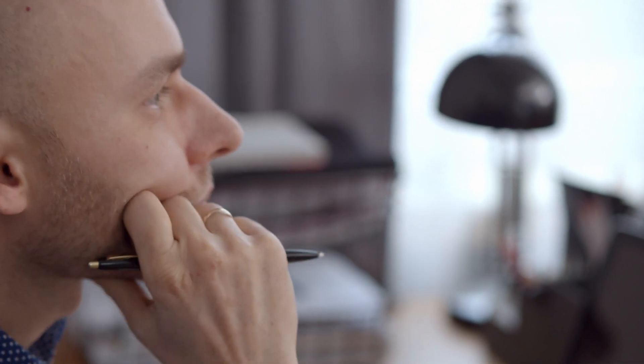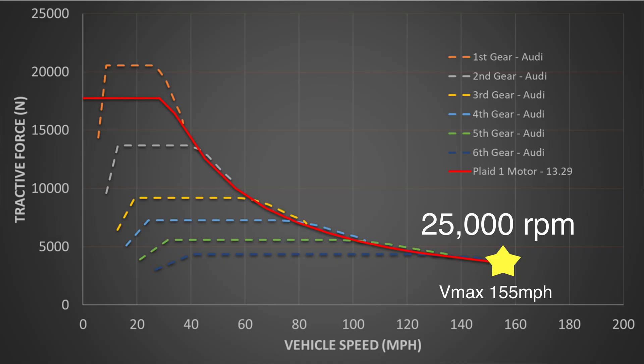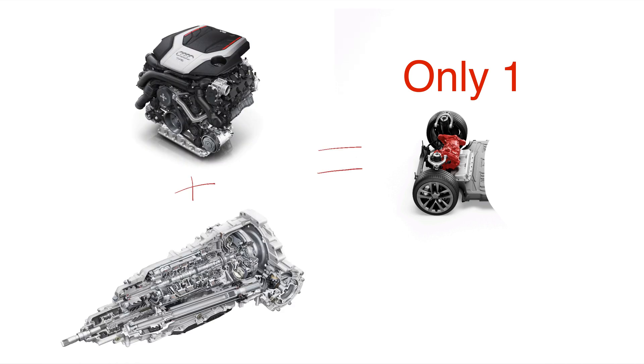If we take this one step further, what if the Plaid motor can spin to 25,000 RPM? Purely hypothetical at this moment, but not out of the realm of possibility. This would allow us to increase the gear ratio to 13.29 and increase peak tractive force to nearly 18,000 newtons. This would mean a single electric motor and simple reduction gear can compete with the turbo V-6 and its multi-speed transmission over its full operating range.